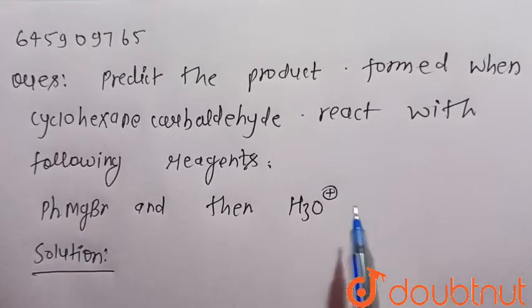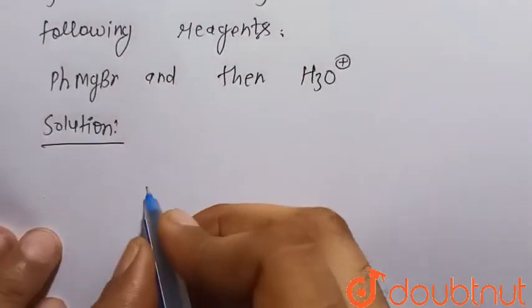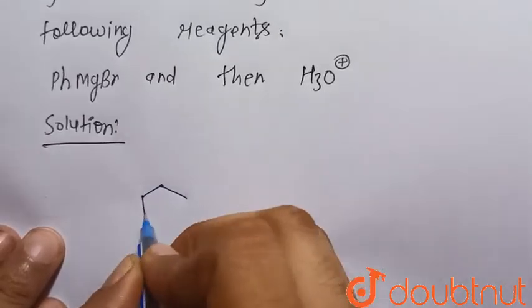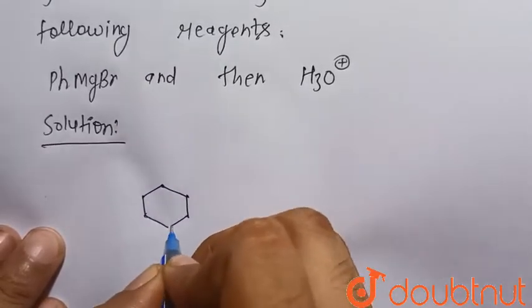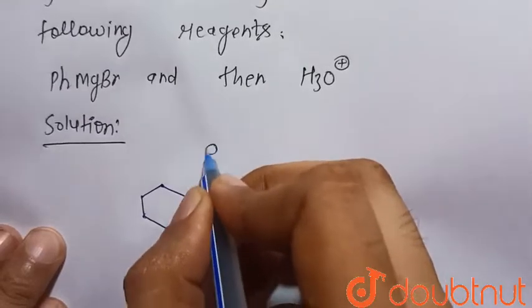And then by the acidic hydrolysis, that is H3O+. So we know that the structure of cyclohexane carbaldehyde is this: cyclohexane having the carbaldehyde, that is CHO group, C double bond O, or this is the aldehyde group.